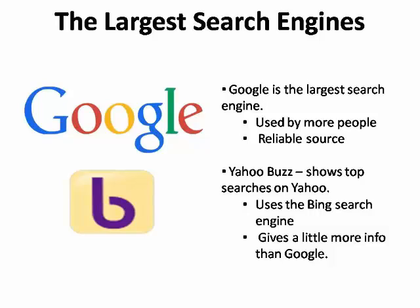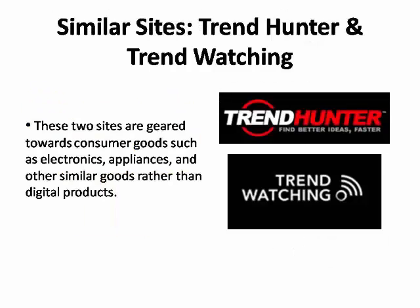Another site is Yahoo Buzz, which also shows the top searches on Yahoo, which uses the Bing search engine. Yahoo Buzz also gives a little more information than Google. Two other similar sites are Trend Hunter and Trend Watching. These are more geared toward consumer goods, such as electronics, appliances, and other hard goods, rather than digital products, which are what you'll probably be promoting.